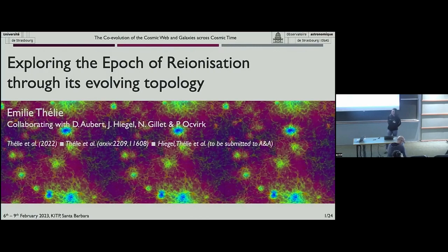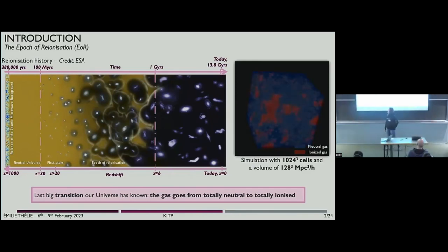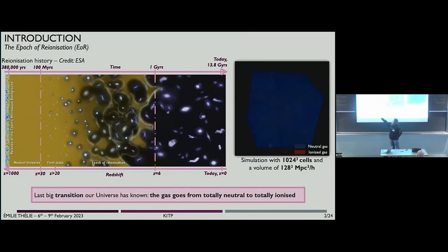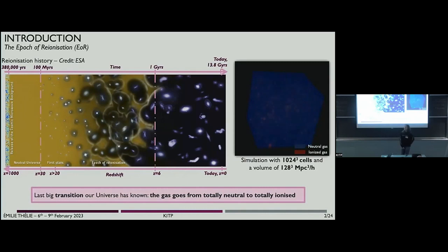I'm going to present some studies about the epoch of reionization and about its evolving topology. The epoch of reionization happened a few hundred million years after the Big Bang, when the gas of the universe was cold and neutral, and the first galaxies and the first objects were created. While evolving, the galaxies emitted UV radiation that ionized the gas around them to form ionized bubbles.